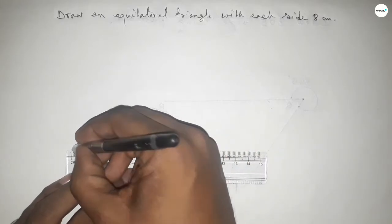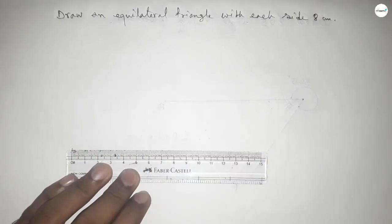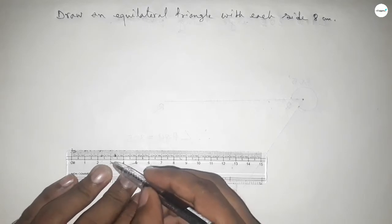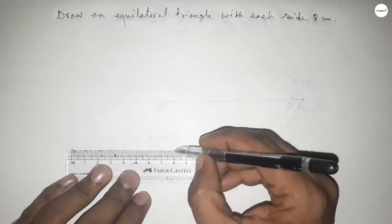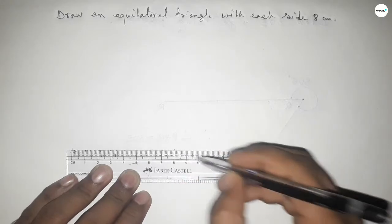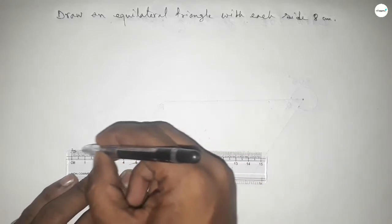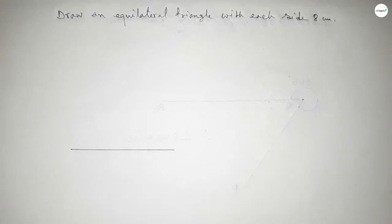So this is starting zero, then this is 1, 2, 3, 4, 5, 6, 7, 8. So this is first drawing a line of length 8 centimeter. And taking this is A and B, so line AB equal to 8 centimeter.